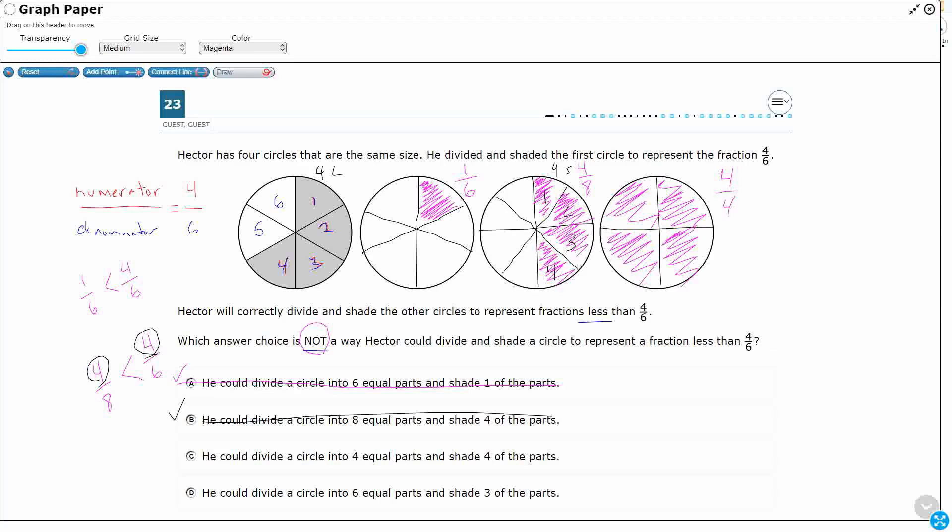So 4/4 is actually going to be greater than 4/6, because I have the same numerator, but I have less of a denominator. These four pieces are my four larger pieces, and now that's my four smaller pieces. So that's the one that's not going to work.